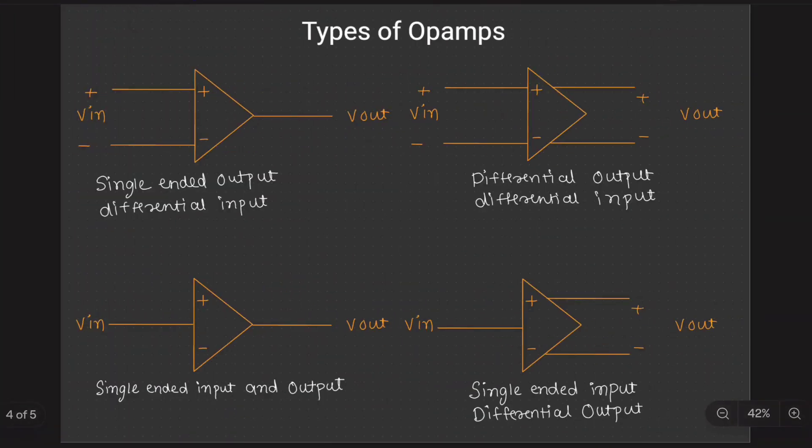Coming to the next topic, that is types of op-amp. What are the types of op-amp? Generally we classify op-amp as four types. We have differential input, single-ended output.